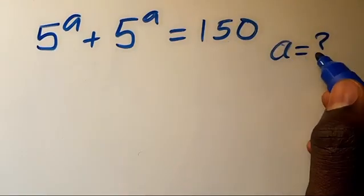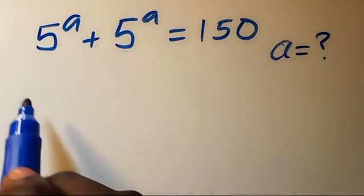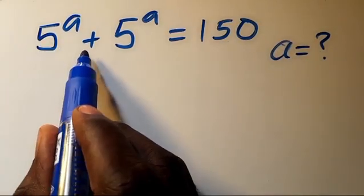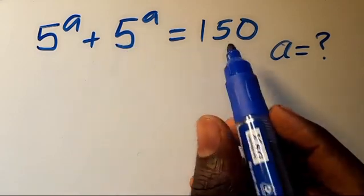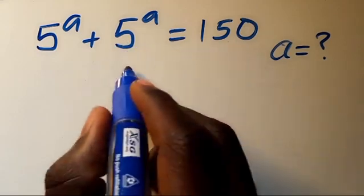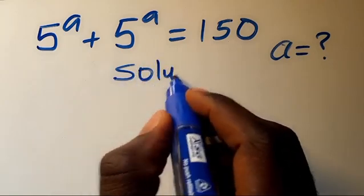Hi, what is the value of a given that 5 to the power of a plus 5 to the power of a equals 150? Let's find the solution.